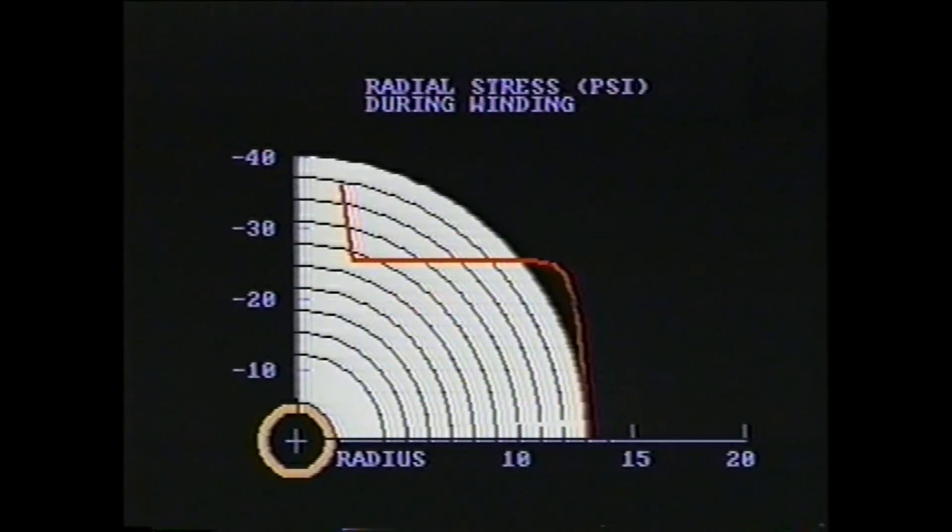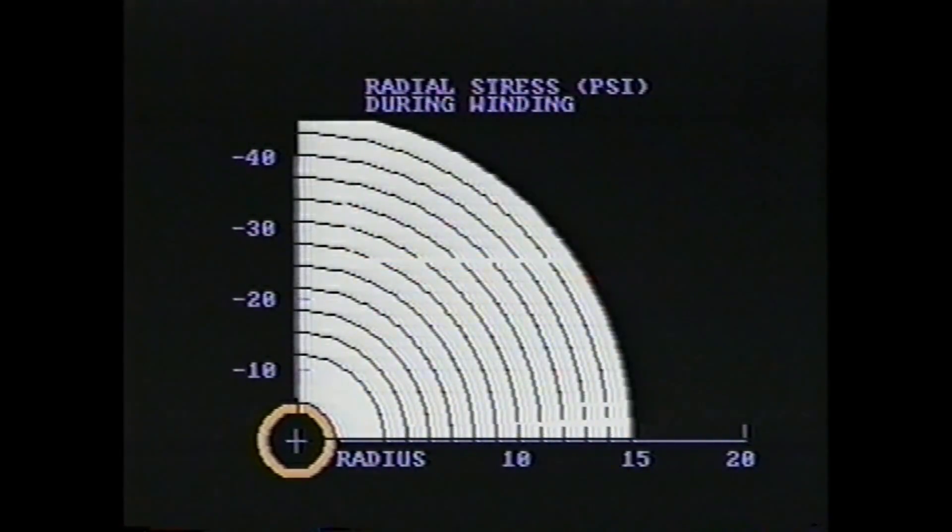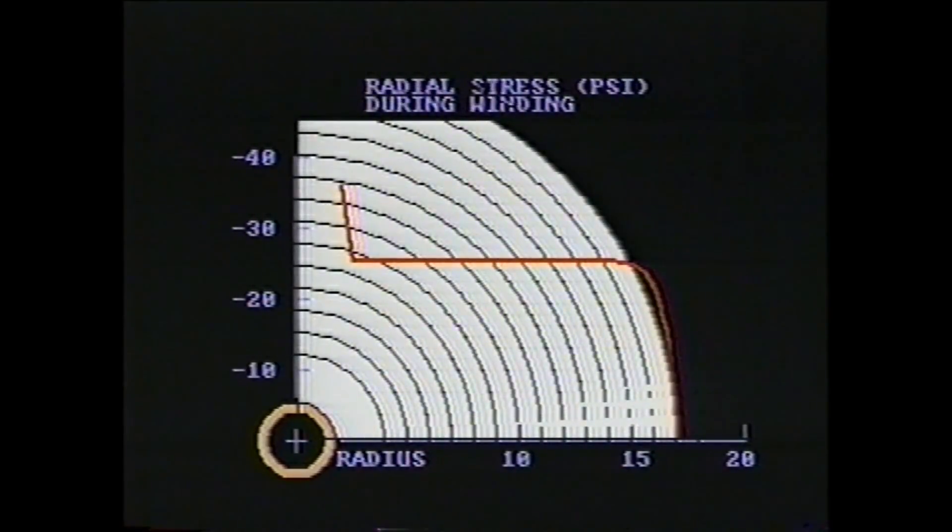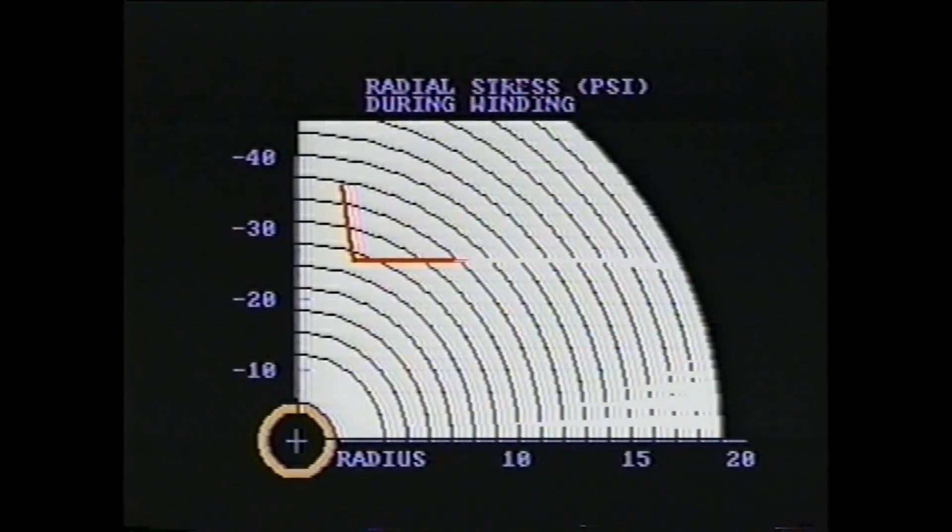Plotting the radial stresses shown on the vertical axis against position in the roll shown on the horizontal axis, we can see this interlayer pressure inside a paper roll as it is wound at an optimum constant tension. As the roll is winding, we can see that the radial compressive stress is nearly constant throughout the bulk of the roll, except at the outer surface where it is zero and in the core vicinity.